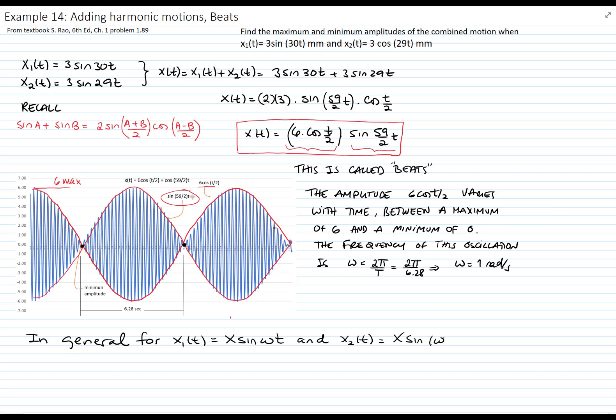So the function x₁ plus x₂ becomes 2x cos(Δt/2) times sin((ω+Δ/2)t). The sine wave with frequency ω plus Δ/2 is almost sine wave equals to sin(ω).